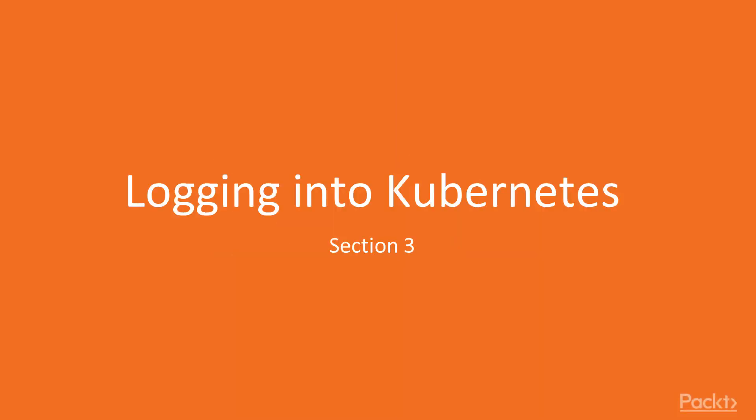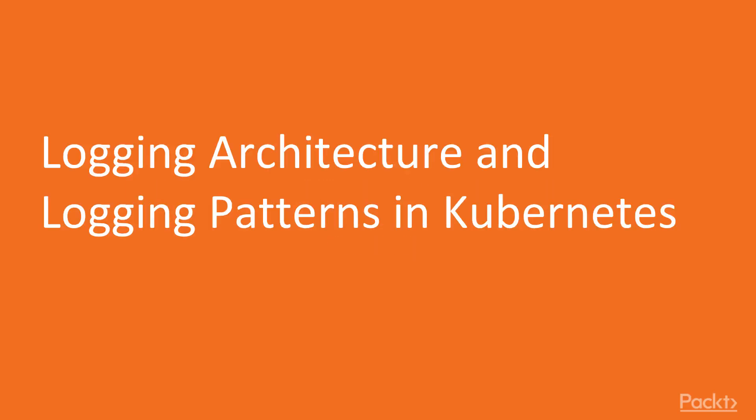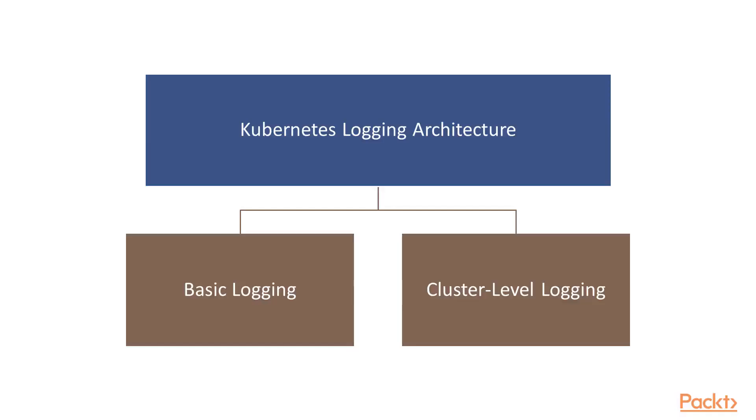In this section, we will look at Kubernetes logging, a few common issues with logging, and understand how to use logging to identify problems in the cluster. In this video, we will look at Kubernetes logging architecture and logging patterns. Kubernetes logging can be characterized into two types: basic logging, and centralized or cluster-level logging.